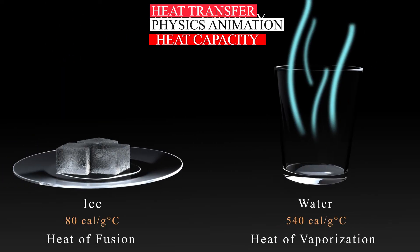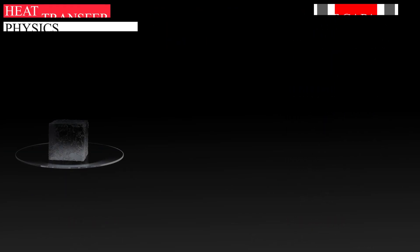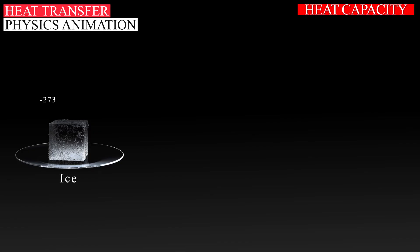With these values, it's easy to calculate exactly how many calories of heat energy are required to transform 1 gram of ice at absolute zero to steam. To warm 1 gram of ice from minus 273 degrees Celsius to 0 degrees Celsius would be 273 times 0.5 calories per gram, or about 140 calories.